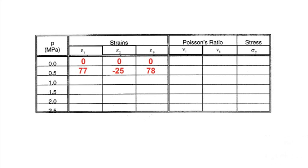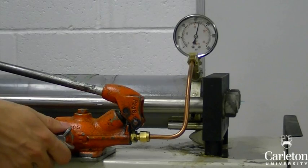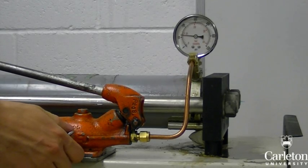Once you reach each successive pressure, stop pumping and record the strains. Once you've finished with 2.5 megapascals, open the valve like this to release the pressure.